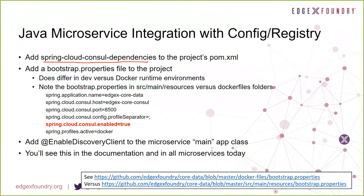Next, you'll want to add a bootstrap properties file to your project. You'll notice in every one of our microservices today there is a bootstrap properties file — actually a couple, because this will differ for development versus Docker runtime environments. The bootstrap properties file provides information to the application about what your microservice name is (for example, EdgeX Core Data), where the Consul instance is located and what port it's on, a profile separator, and whether or not to enable this microservice for using the configuration registration microservice.